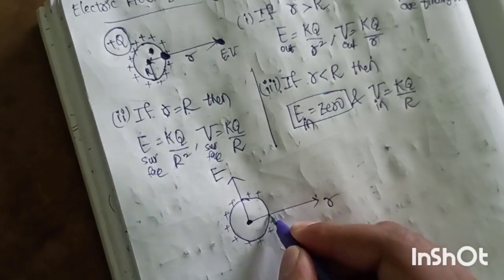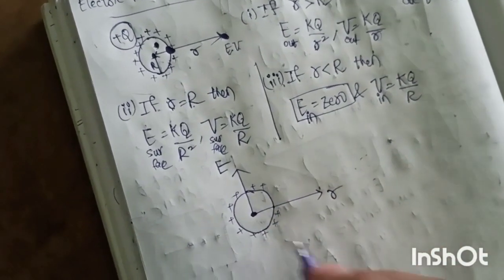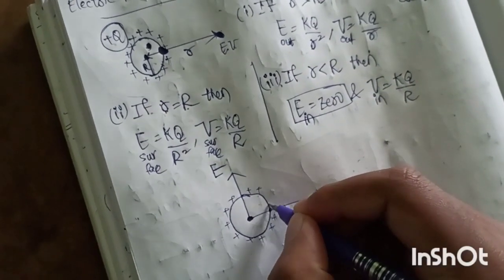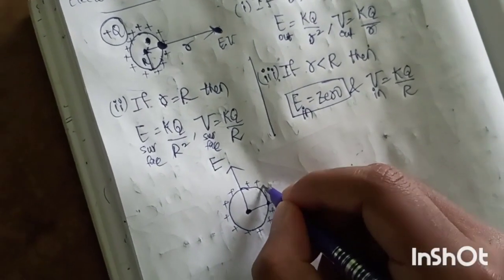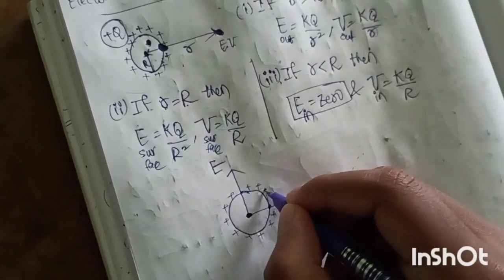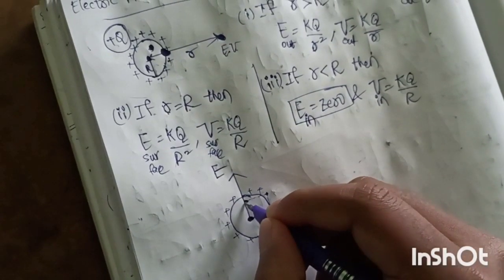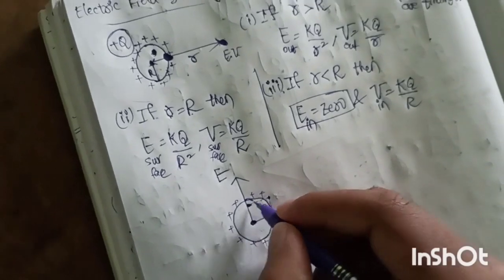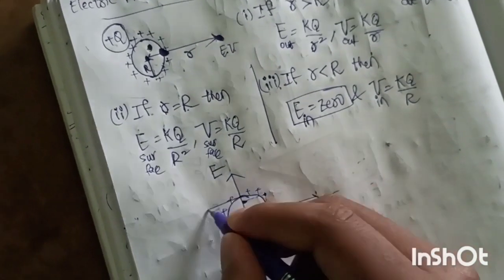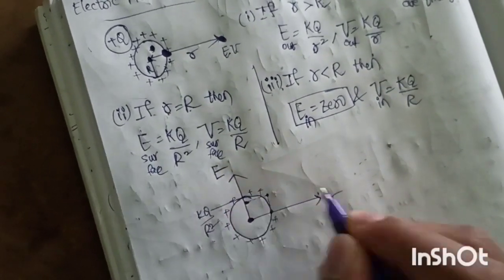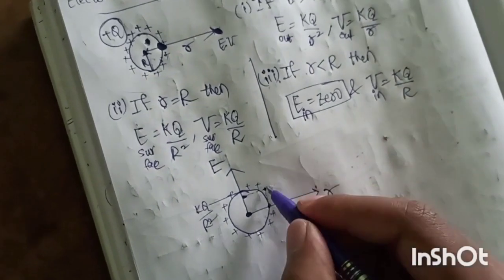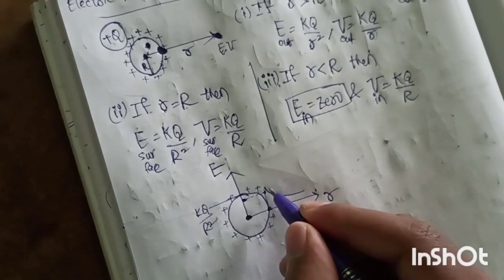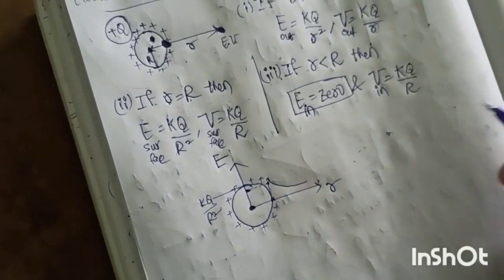From r equal to zero up to the surface, E stays at zero. At the surface, the value of E suddenly rises to kq by R squared. After the surface, as r increases outside, E decreases. That is the overall graph shape for the hollow sphere.